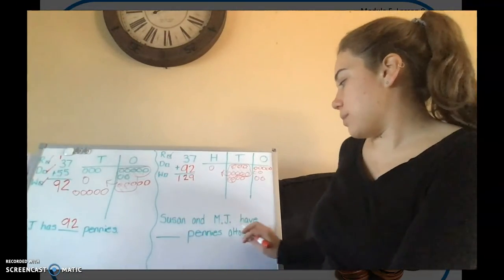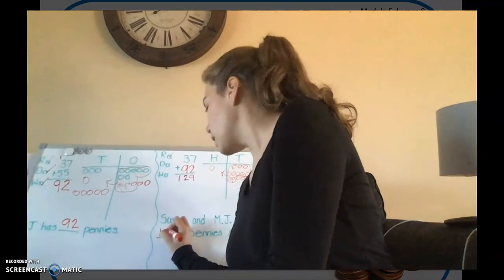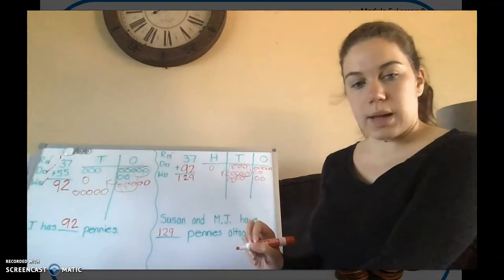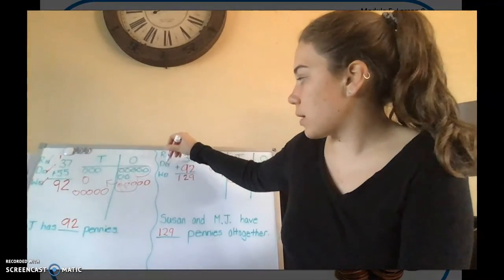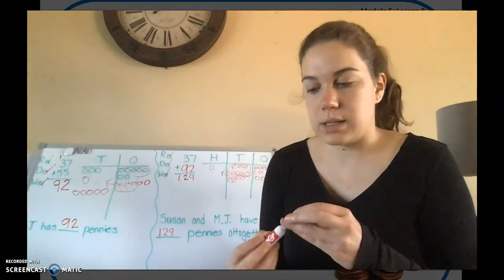So Susan and MJ have 129 pennies all together. Nice work. So we've read our problem, we've drawn our picture, and we've written our word sentence for that. Nice work.